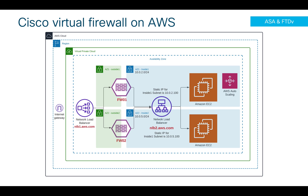Once traffic is received on that load balancer, it is forwarded to one of the firewalls available in the backing pool. The moment I receive the packet on the firewall, I will change the source to my inside interface and the destination to the static IP address of the NLB.